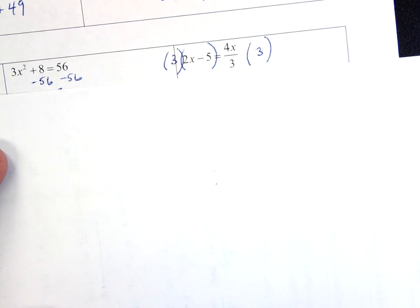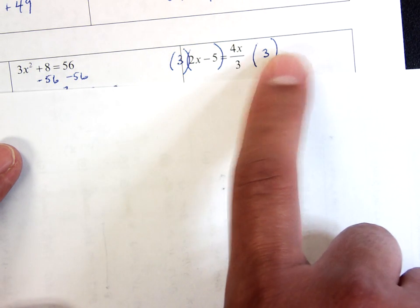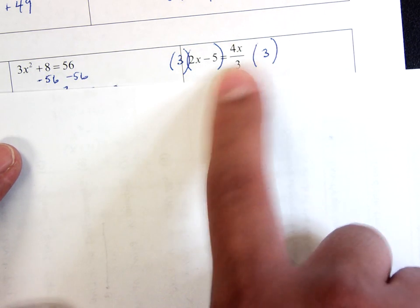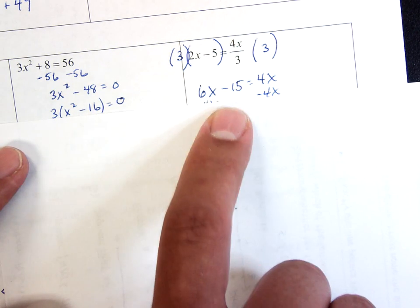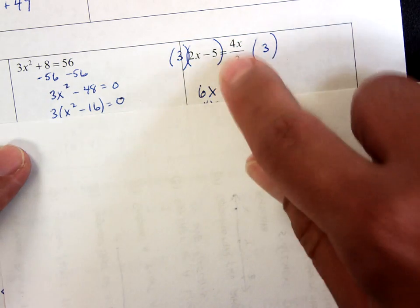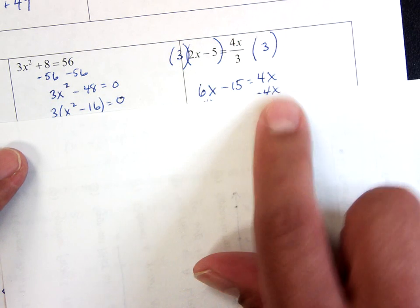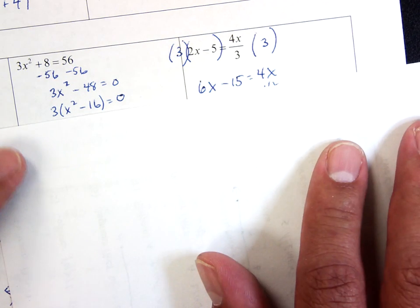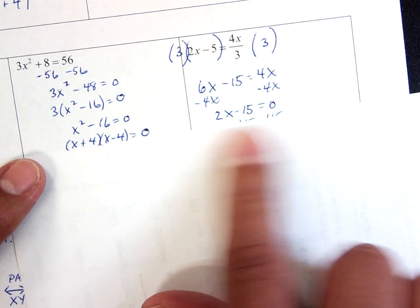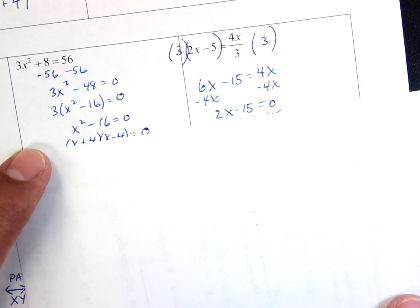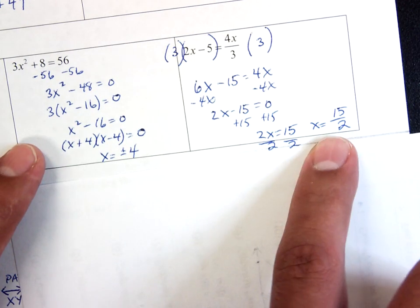This one, I have a 3 on the bottom, I don't want a 3 on the bottom. Multiply both sides by 3 because 3 divided by 3, these are going to go away, that's what I want. From the left hand side I have 3 times 2x which is 6x, 3 times minus 5 is negative 15. On the right hand side, this 3 times 3, this 3 on the bottom and this 3 go away, it leaves me the 4x. I want all my x's on one side, I have x's on both, I subtract 4x from both sides which gives me 2x - 15 is equal to 0. Now I want the 15 to go to the other side, add 15 to both sides. I get 2x equals 15, divide both sides by 2 and I get x equals 15 over 2.